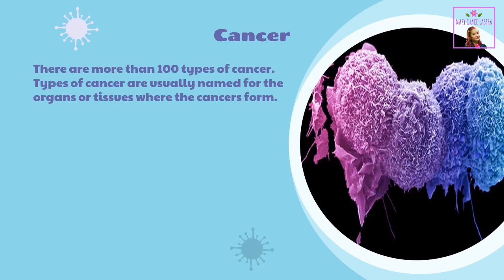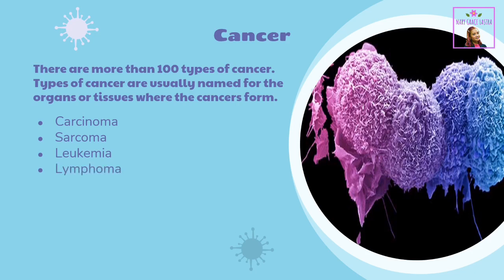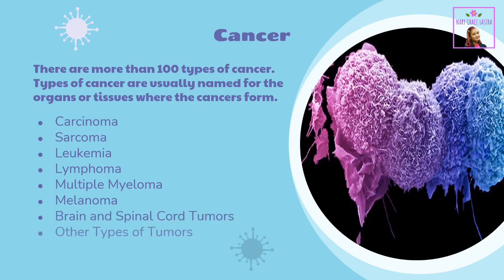Cancer is a disease in which some of the body's cells grow uncontrollably and spread to other parts of the body. Cancer can start almost anywhere in the human body, which is made up of trillions of cells, and there are more than 100 types. Types of cancer are usually named for the organs or tissues where they form. Categories include carcinoma, sarcoma, leukemia, lymphoma, multiple myeloma, melanoma, brain and spinal cord tumors, and other types of tumors.